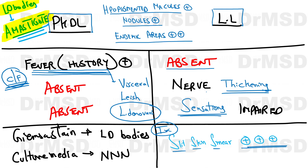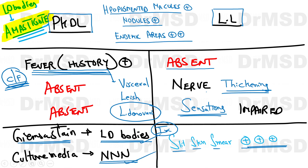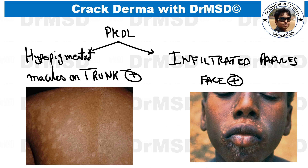In investigations, if it is lepromatous leprosy, the slit skin smear will be given as positive. For PKDL, Giemsa-stained findings will be given and identification of LD bodies is also a key clue. The culture medium used is the NNN medium (Nicolle-McNeal-Novy medium). In PKDL, hypopigmented macules can be present over the trunk along with infiltrated papules over the face.